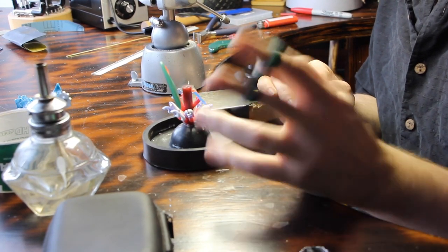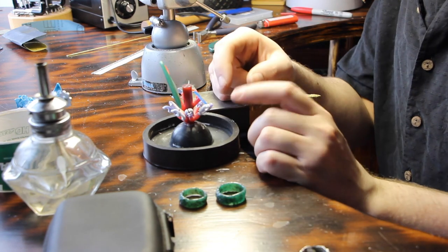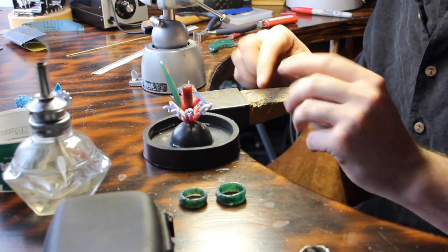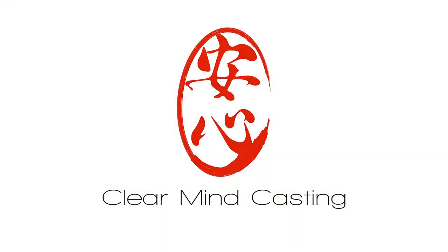I've got a couple of rings here as part of a client project and we're going to sprue them up. I'm going to explain how the spruing works and some of the methodology, some of the decision-making as to why you do it a certain way versus another way.